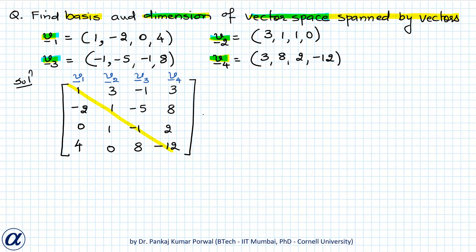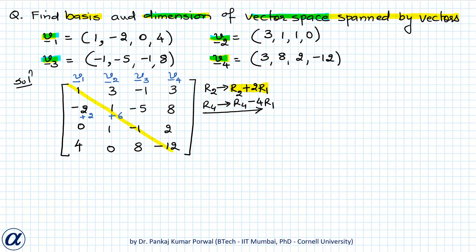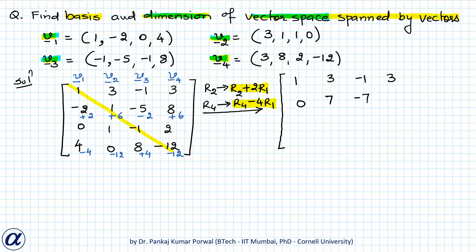First, I will do R2 → R2 + 2R1 and R4 → R4 - 4R1. R2 + 2R1 gives: +2, +6, -6, -6 here; and R4 - 4R1 gives: -4, -12, +4, -12 here. So this gives the matrix: 1, 3, -1, 3; 0, 7, -7, 14; 0, 1, -1, 2; 0, -12, 12, -24.